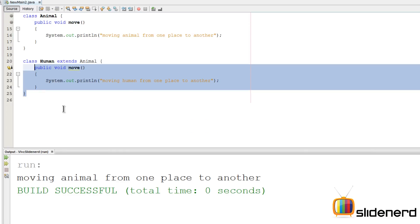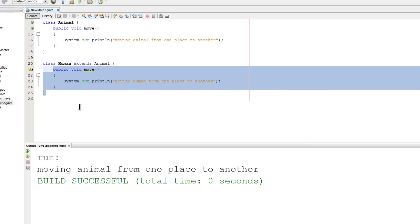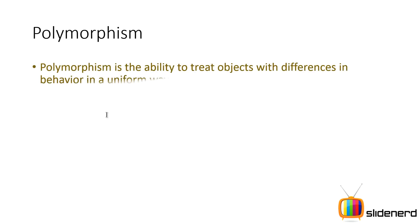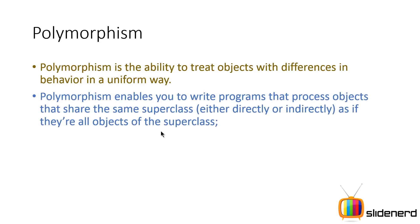At this point you might not be so clear about why this is necessary. Let's take a better look with some presentations. Polymorphism is the ability to treat objects with differences in behavior in a uniform way. This lets you write programs that process objects that share the same superclass. These are the formal definitions put up to help you understand the formal concepts behind polymorphism and dynamic method dispatch.